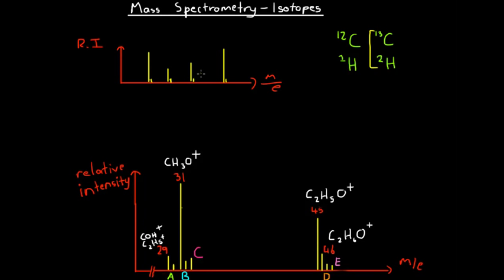For that reason, each fragment — each of these major peaks — can in fact have small peaks surrounding it due to the different, very rare isotopes of any of the atoms that formed part of that fragment. Any other atom that was part of the fragment could have isotopes causing some other smaller peaks surrounding it.